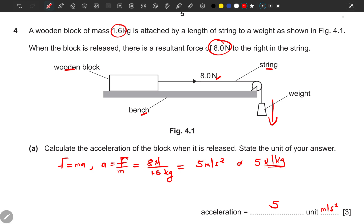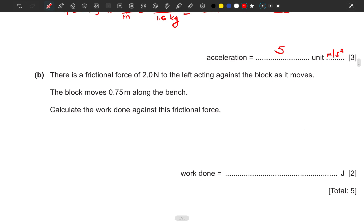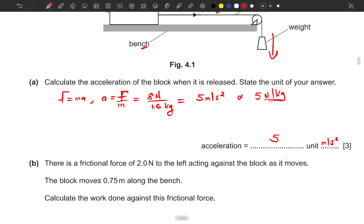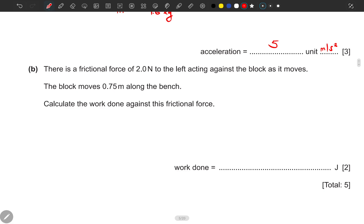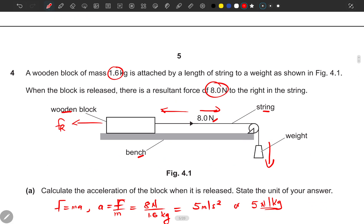Part B says there is a friction force of 2.0 N to the left acting against the block. So this guy is moving like this, and now it is acting against this block, right? There's another force, the friction force. The block moves 0.75 meters along the bench. Calculate the work done against the friction force.